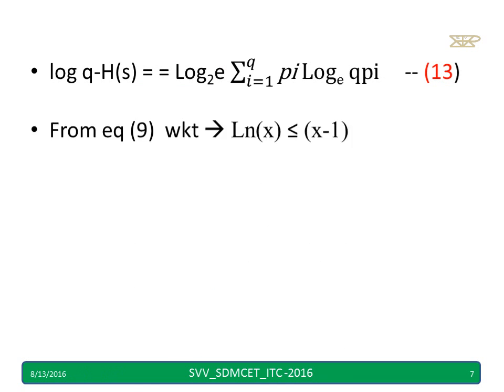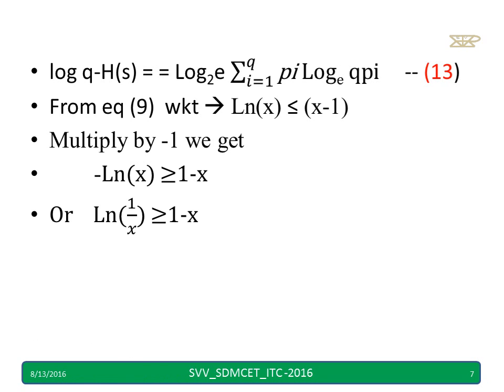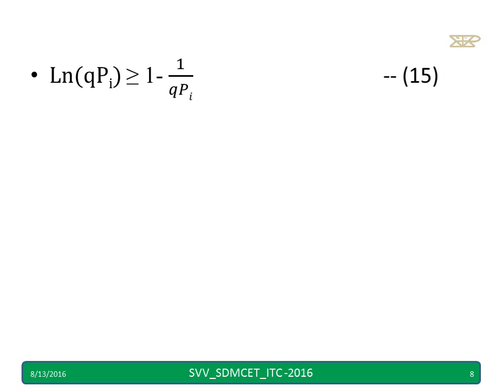Now take this as equation number 13. From the equation number 9, logarithmic inequality is what you have taken. ln of x is less than or equal to x minus 1. Simply multiply by minus 1. We will get -ln of x is greater than 1 minus x, or I can write ln 1 by x is greater than or equal to 1 minus x. Now we can take ln of qpi. Simply x is nothing but you can take 1 by qpi and rewrite. So you got the equation number 14.